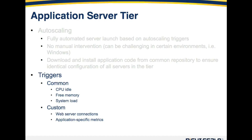In addition to these common metrics, you can also have custom triggers. For example, web server connections: the RightScale templates that install the Apache web server come pre-configured with a web server connection metric that allows you to scale up and down based on the number of connections that Apache web server is currently handling. You can also have application-specific metrics using our custom collectd plugin architecture. If your application can be queried — maybe an SQL query or a script — that outputs a number or value, that value can be used as an autoscaling metric to scale both up and down.